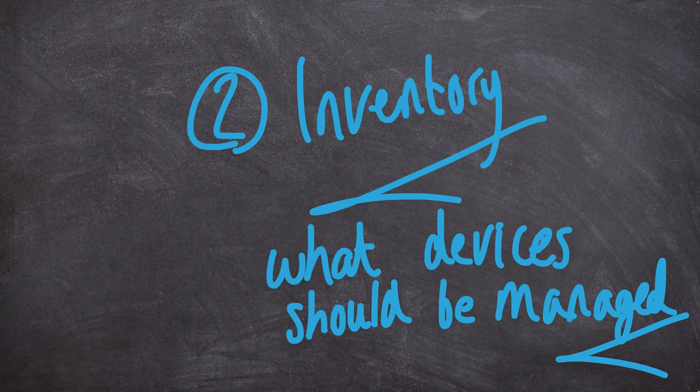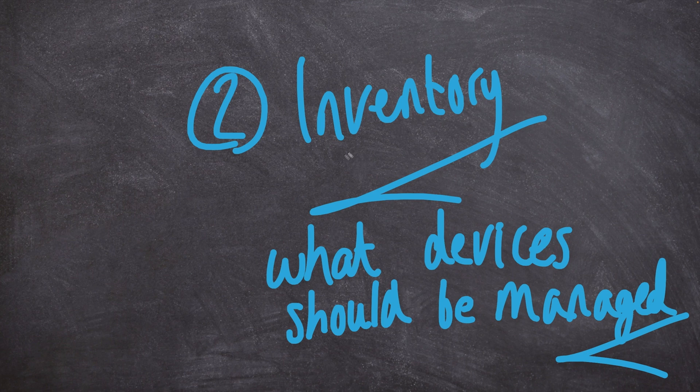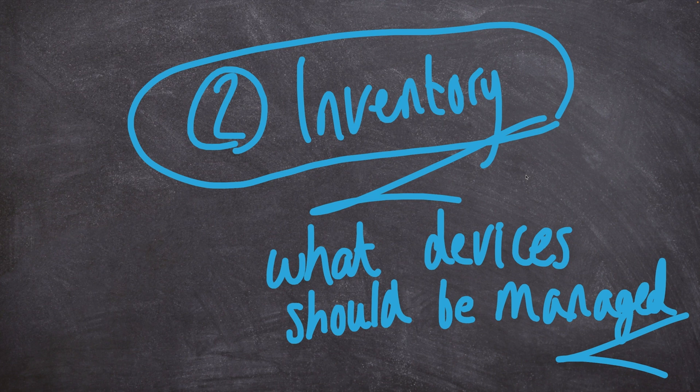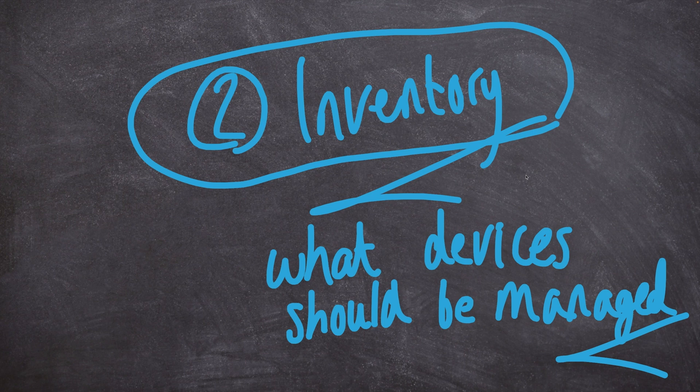In our lab environment we've created two particular machines that will be managed by Ansible. To let Ansible know about this, we specify information about those devices in the Ansible inventory - things like IP addresses or hostnames. That's how Ansible knows which devices it should be connecting to.